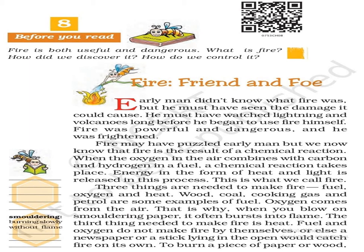Three things are needed to make fire: fuel, oxygen and heat. आग जलाने के लिए तीन चीजों की आवश्यकता होती है: ईंधन, oxygen और ताप. Wood, coal, cooking gas and petrol are some examples of fuel. लकड़ी, कोयला, cooking gas और पेट्रॉल ईंधन के कुछ उदाहरण हैं.